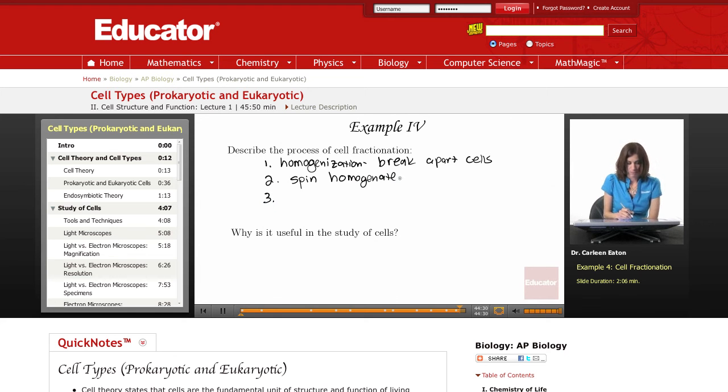The supernatant is poured off, spun, and then poured off into another tube. This process is repeated, spinning at faster and faster speeds to separate out lighter and lighter organelles.